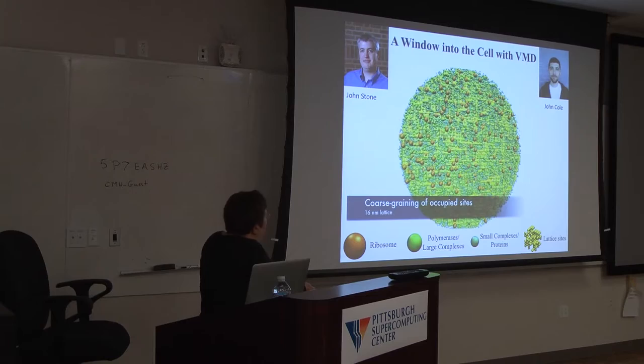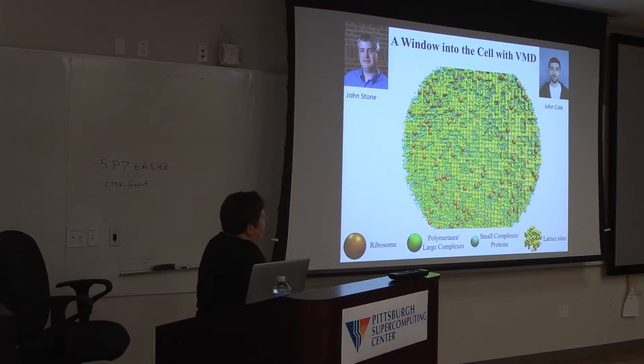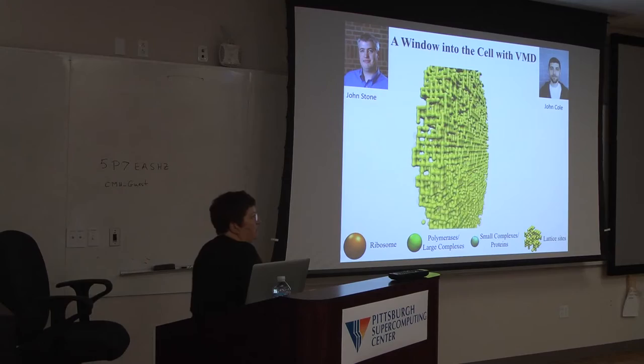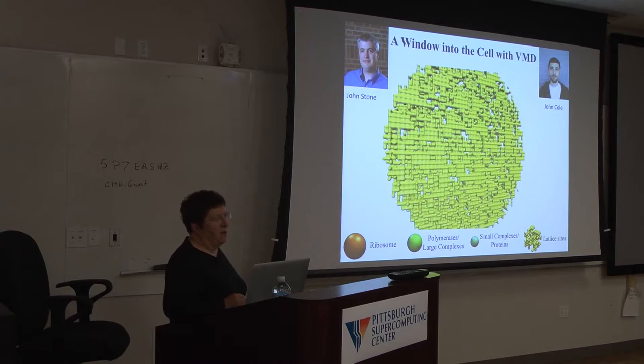Here's an extreme example: packing in ribosomes (orange) and some larger and smaller complexes to fill up the cytoplasm. We worked on an algorithm to do this quickly. When you zoom in it looks like Swiss cheese. We use the ribosomes to indicate which lattice sites are filled or not, and then those obstacle lattice sites become unavailable to the simulation — you do your reactions around them.